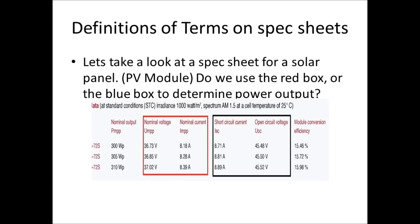Here's some definitions of terms that are on the back of the spec sheet. We're going to take a look at a spec sheet for, I believe it's an Axitec 310 watt solar panel, which is denoted. It's the very last column. You'll see 310 WP, and then you'll see a box in red and a box in black. Now, do we use the red box or the blue, or the black box to determine the power output?